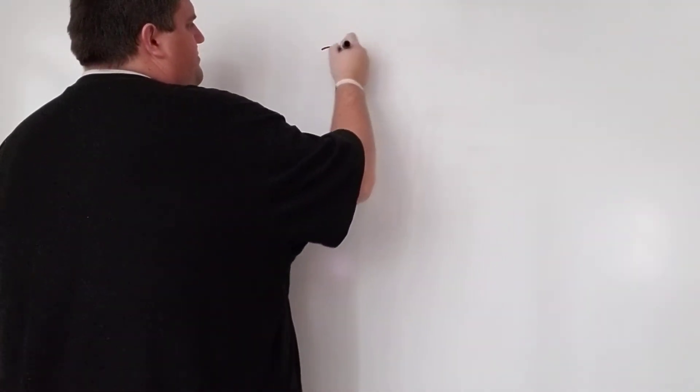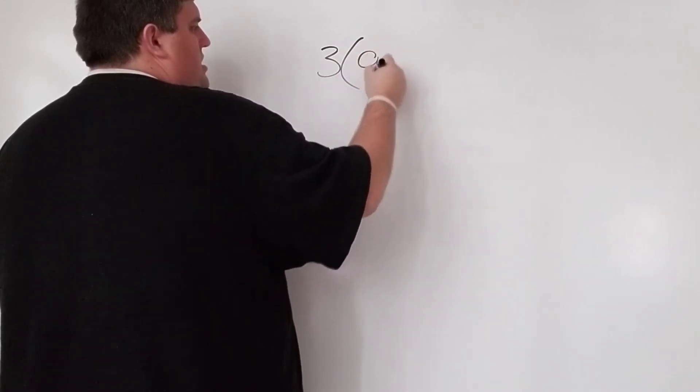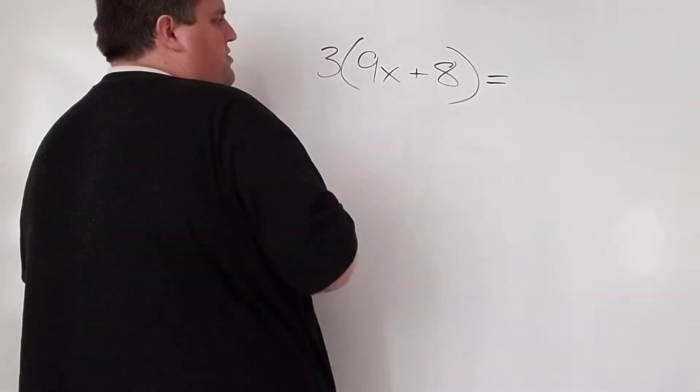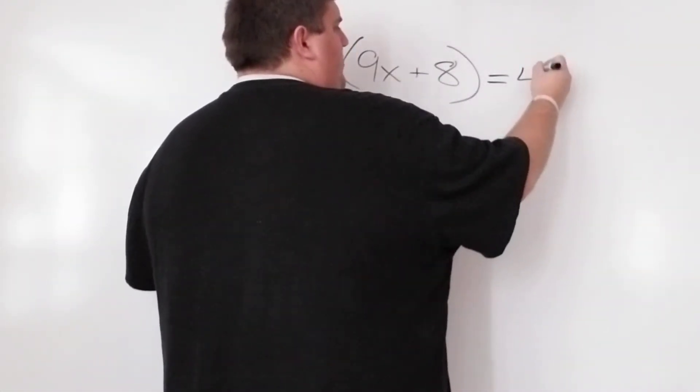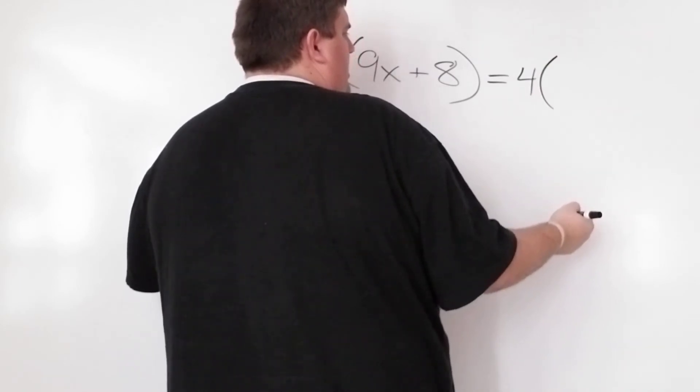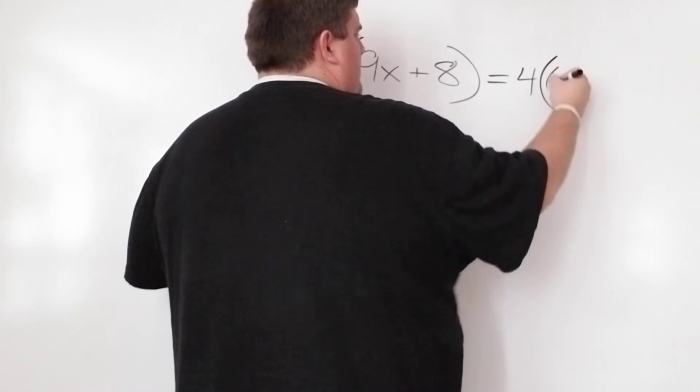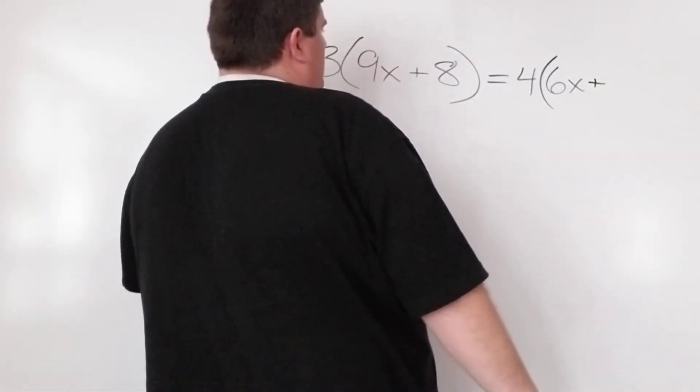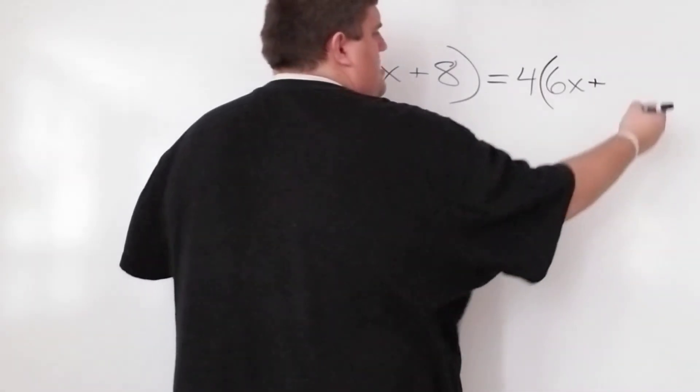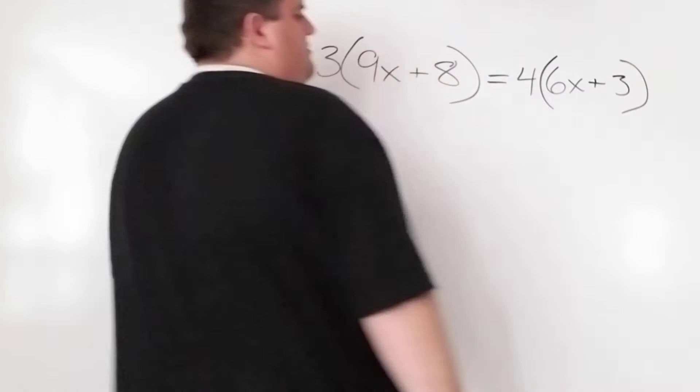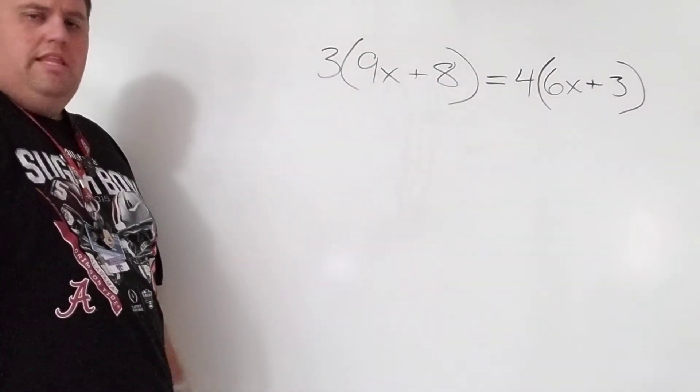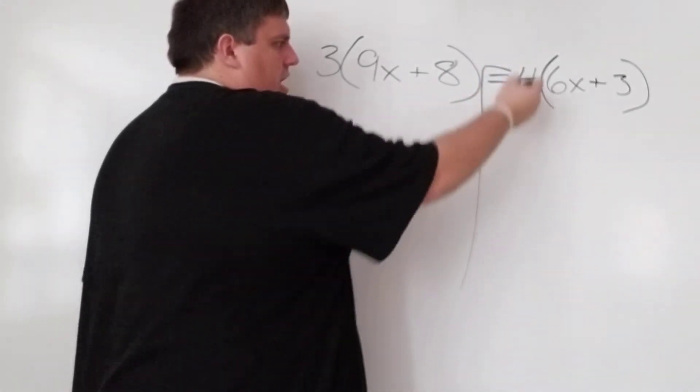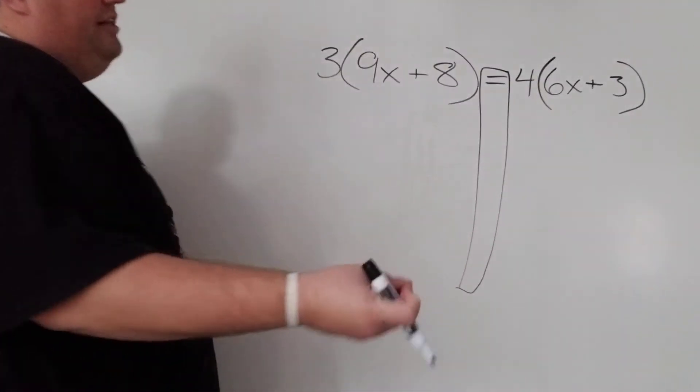Let's go. 3 times the quantity 9x plus 8 equals 4 times the quantity 6x plus 3. Okay. Now, as you can see, this one is definitely different than the last one. We have some other stuff going on here. So I kind of go through my steps.